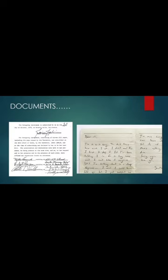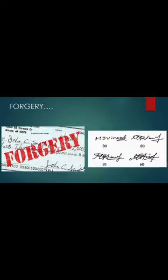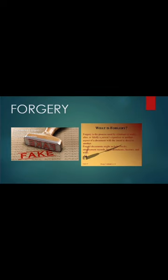Some common types of questioned documents that can be analyzed include handwriting and signatures on wills, suicidal notes, family custody documents, company agreements, loan documents, etc. These documents are analyzed in order to find out whether there is any kind of forgery.